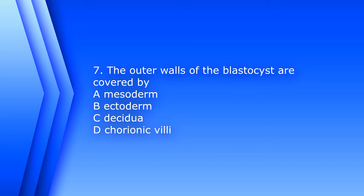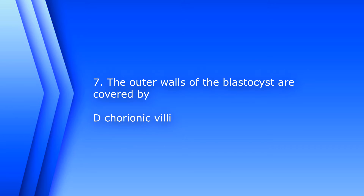Question 7. The outer walls of the blastocyst are covered by: A. Mesoderm. B. Ectoderm. C. Decidua. D. Chorionic villi.